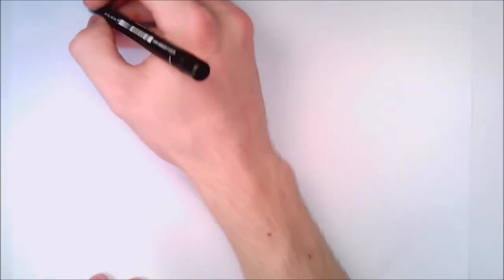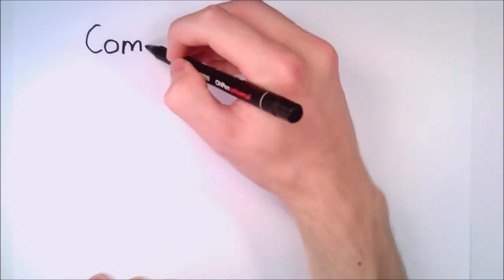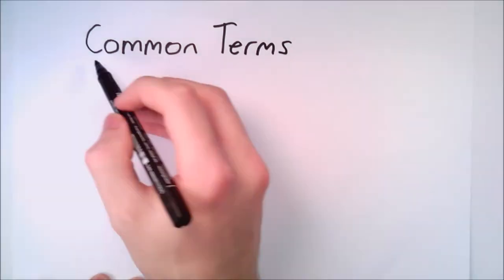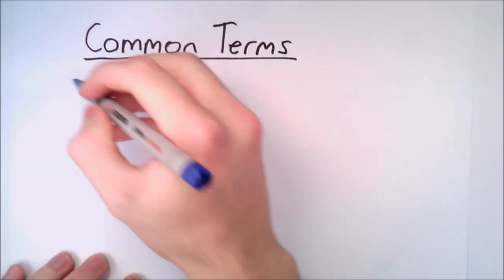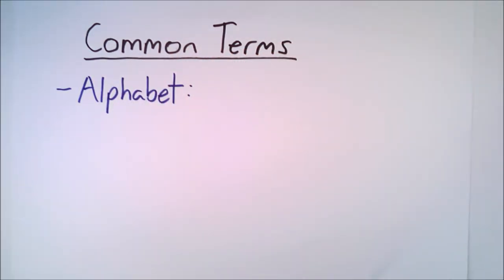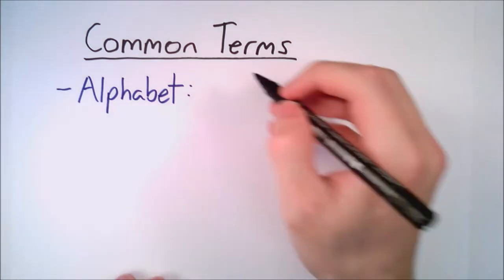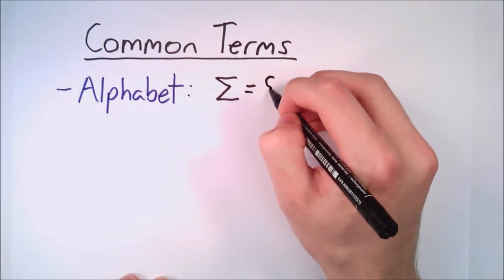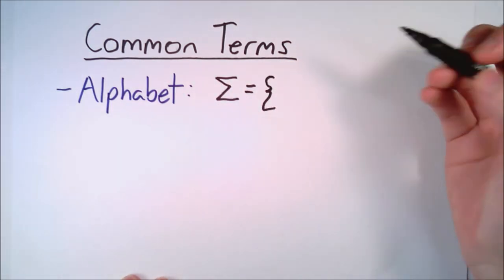In a more general sense, there are three extra words we often use in finite state automata. The first is called the alphabet of our automaton. This is just a list of all possible inputs that result in a transition. In our example, our alphabet is U, S, and L.